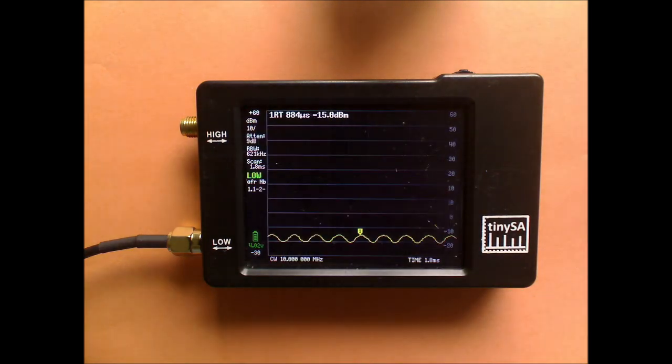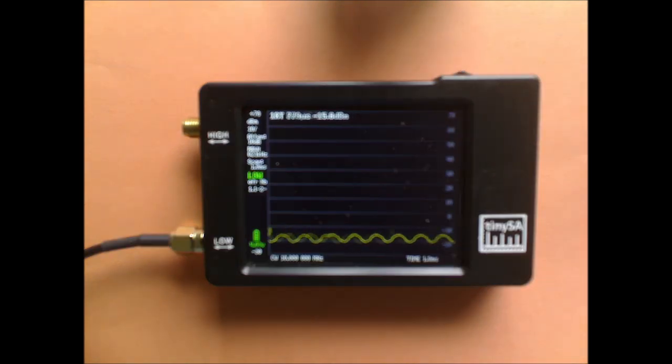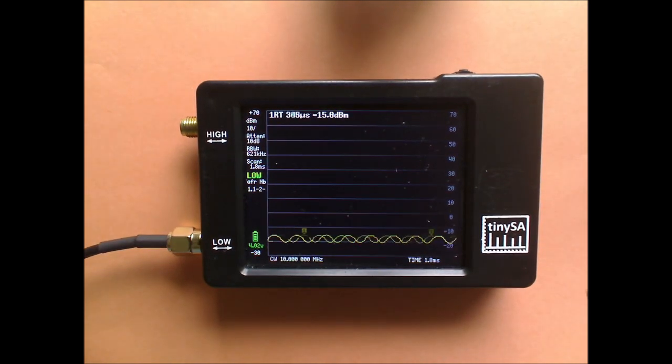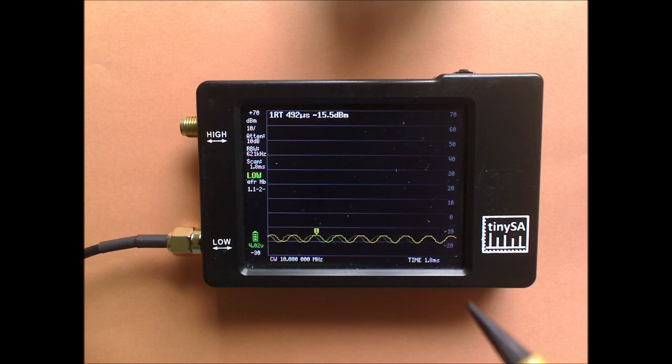10 MHz. And here you already can see the AM modulated signal. But because this is still in dB unit, it's not well possible to see the depth of the modulation.